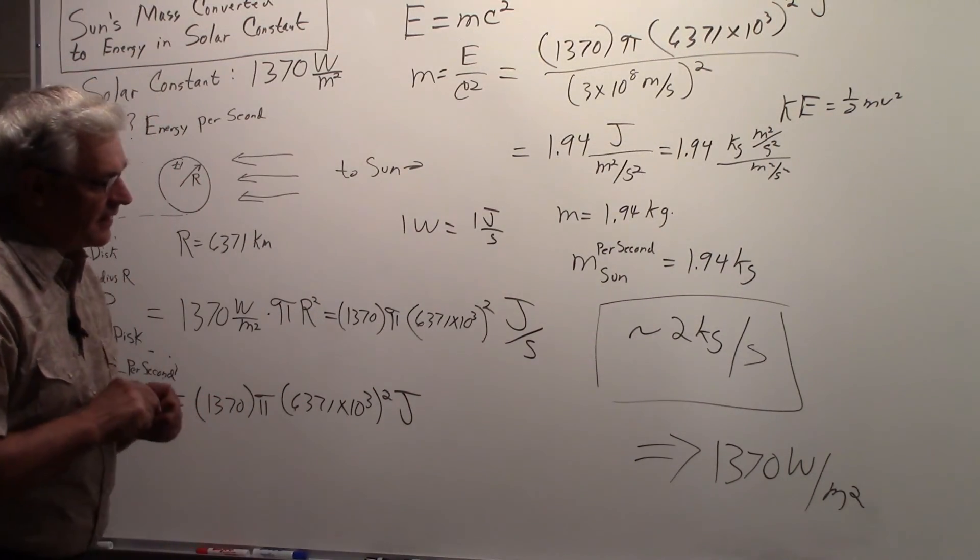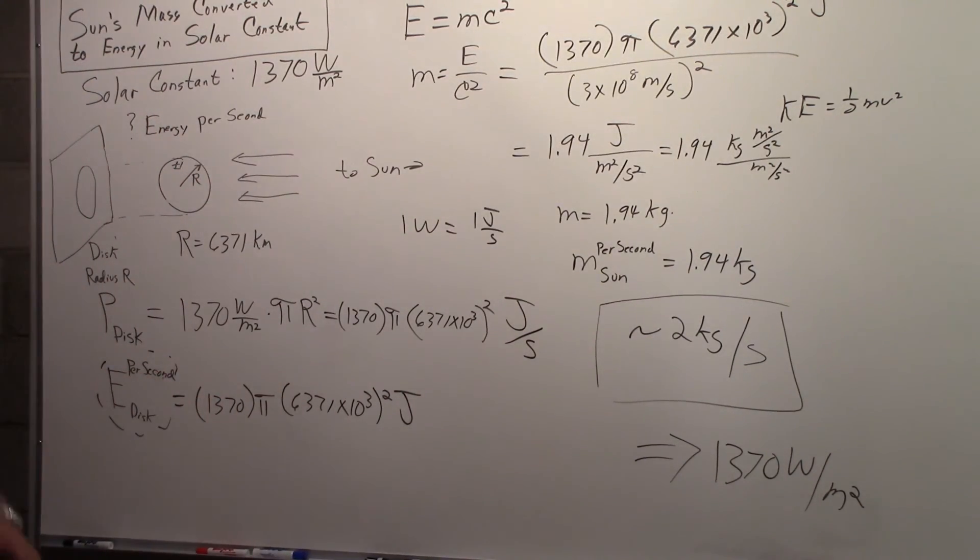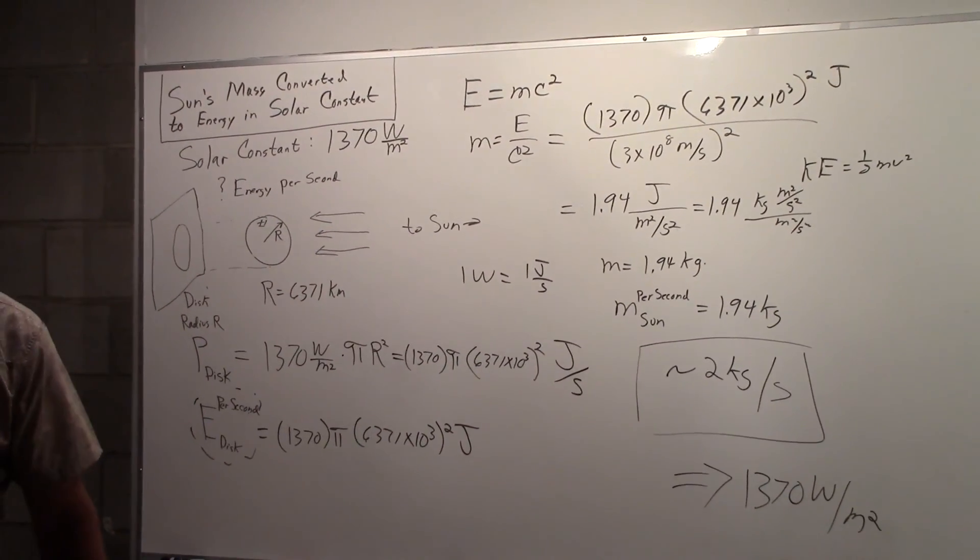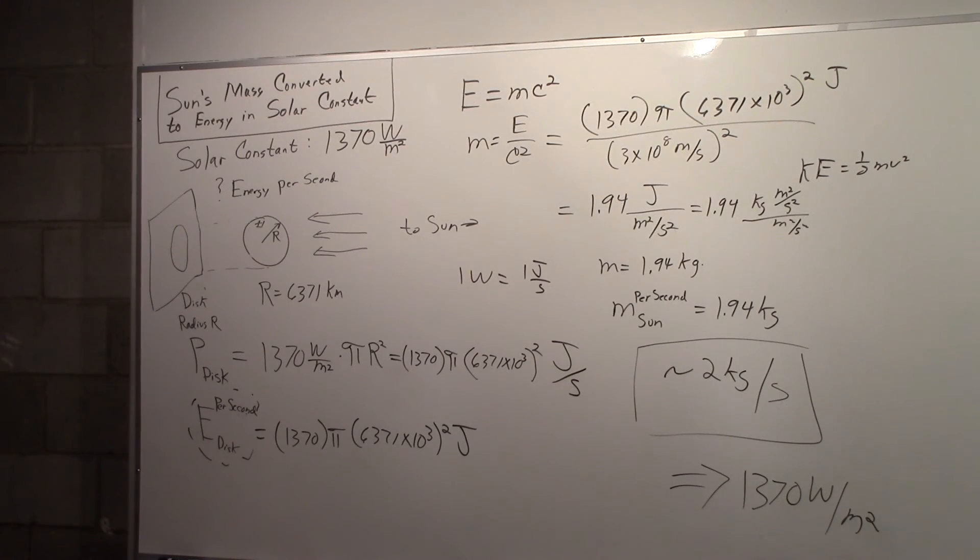2 kilograms of the sun burned. And when I say burned, I mean, of course, a nuclear reaction to produce the solar constant at the Earth.